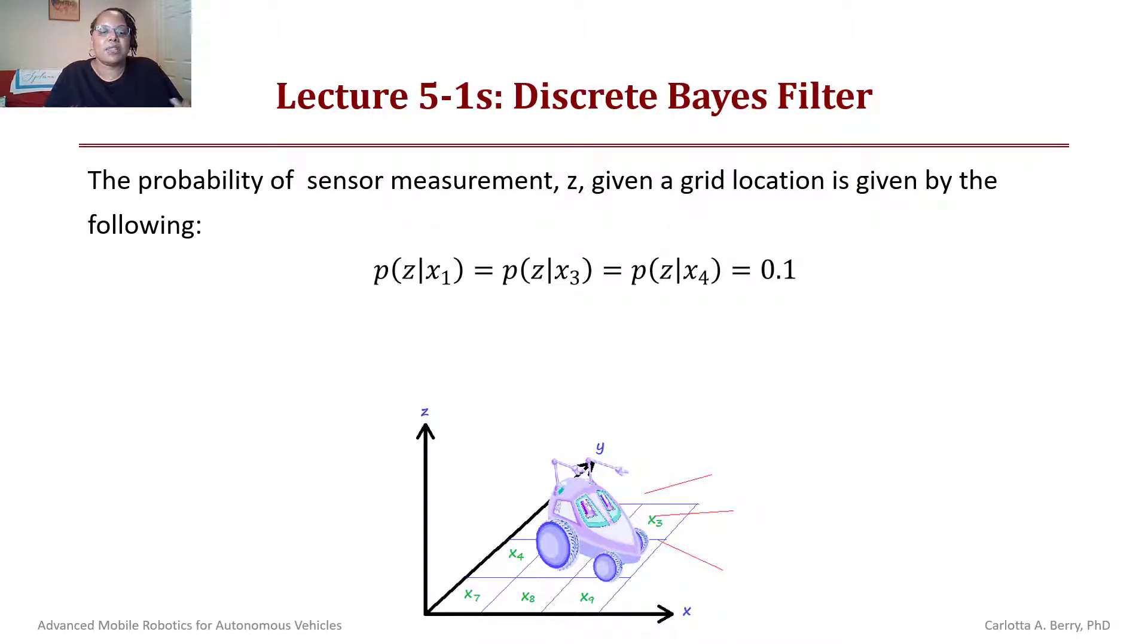The probability of z given x1, x3, or x4 is 0.1. The probability of z given x2, x5, or x7 is 0.8. And the probability of z given x6, x8, or x9 is 0.4.